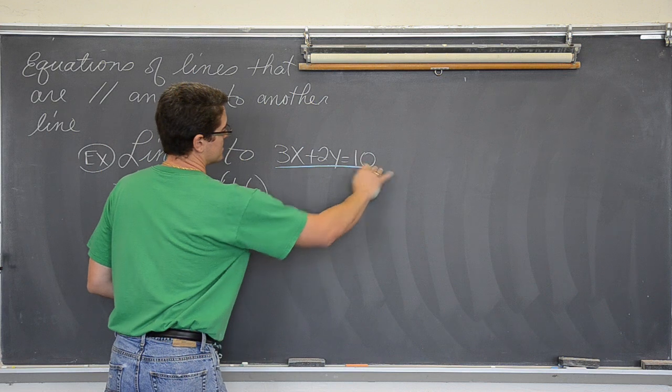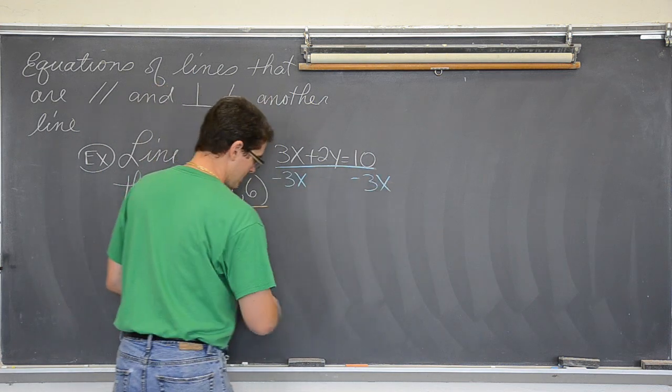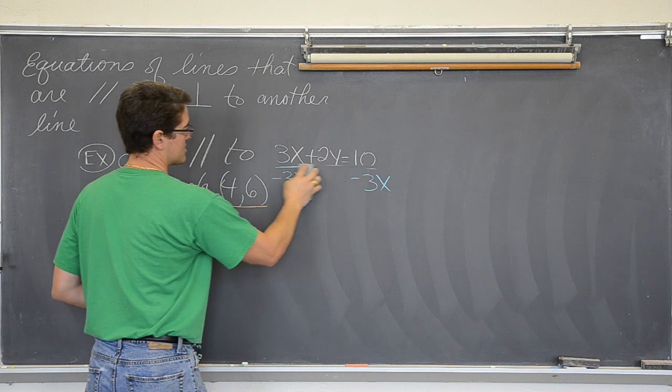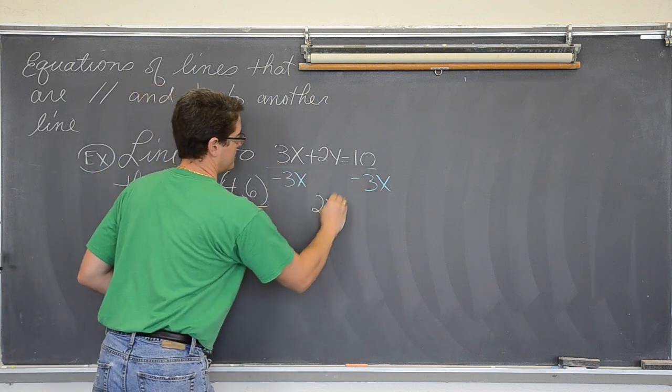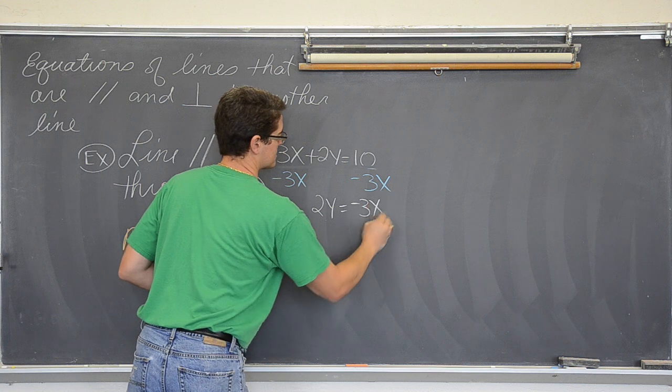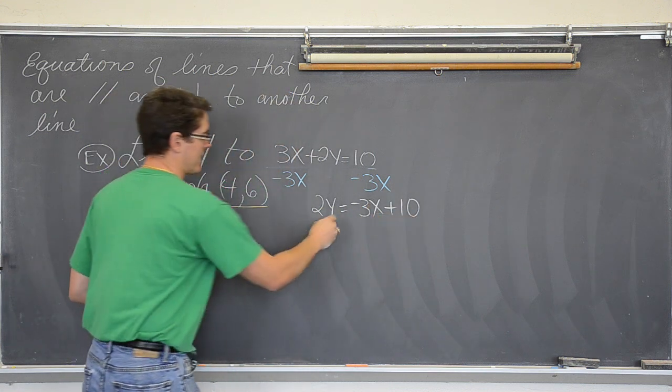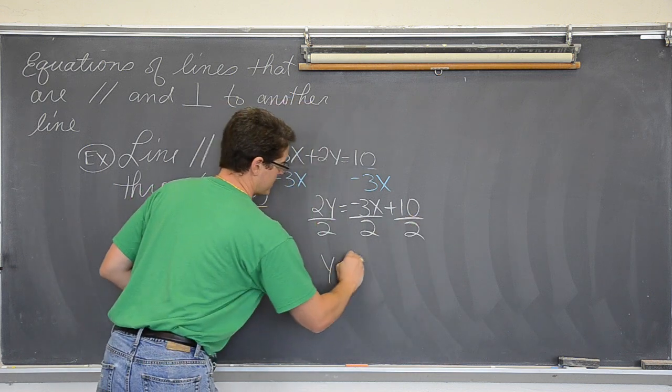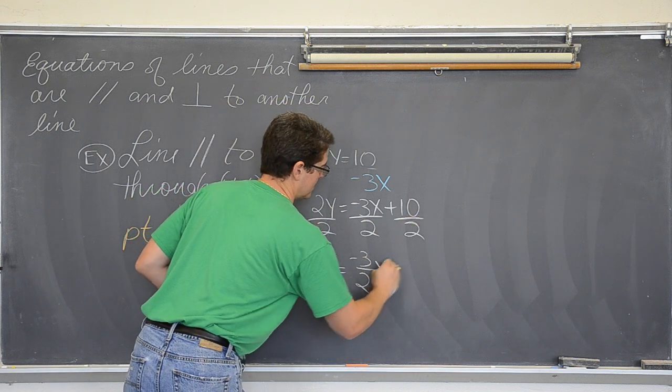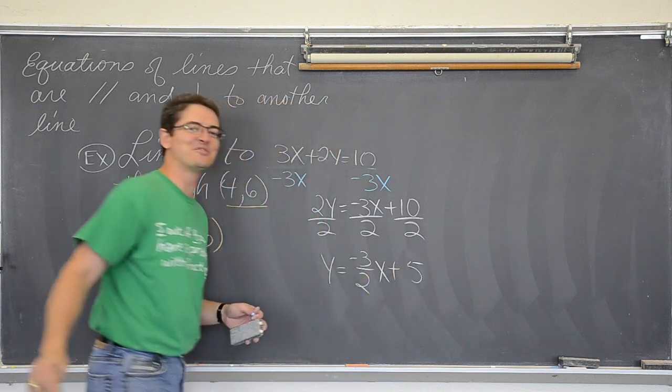I need to get the three x over to the right hand side. I need to get the two away from the y. When I have y equals mx plus b then I have got the slope. I will be able to look at it and tell. So I am going to move this three x over to the other side with subtraction. And we have 2y equals negative 3x plus 10. I want to get y by itself. So I am going to divide everything by two. And get y equals negative three halves x plus ten divided by two is not ten, it is equal to five.